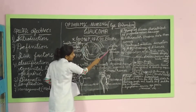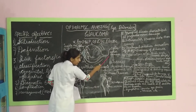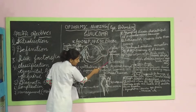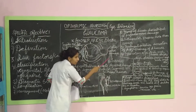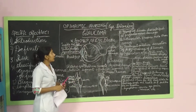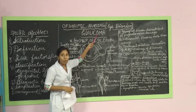Because of optic nerve damage, blindness will occur. That is why we are talking about Glaucoma.